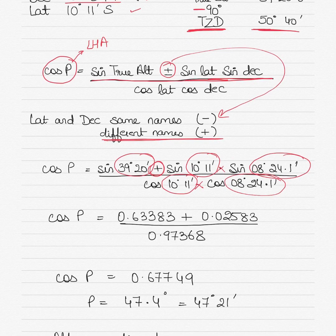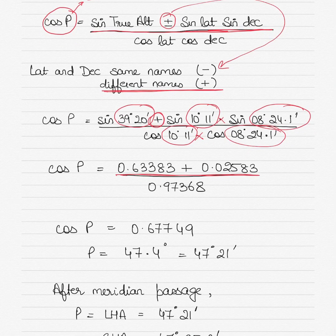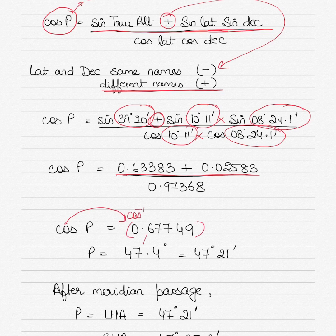Substituting all values into the formula, solving the numerator first then the denominator, cos P equals 0.67749. Keeping at least five decimal places ensures accuracy. Taking the inverse cosine gives an LHA value of 47.4 degrees, or 47 degrees 21 minutes.